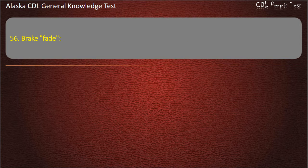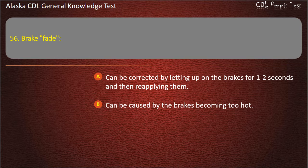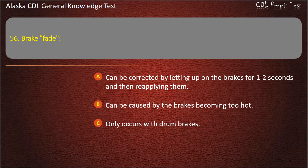Question 56. Brake fade can be corrected by letting up on the brakes for 1-2 seconds and then reapplying them, can be caused by the brakes becoming too hot, or only occurs with drum brakes. Answer: Can be caused by the brakes becoming too hot.